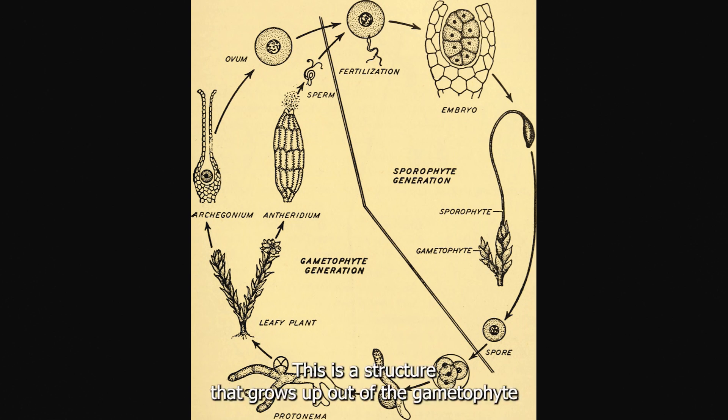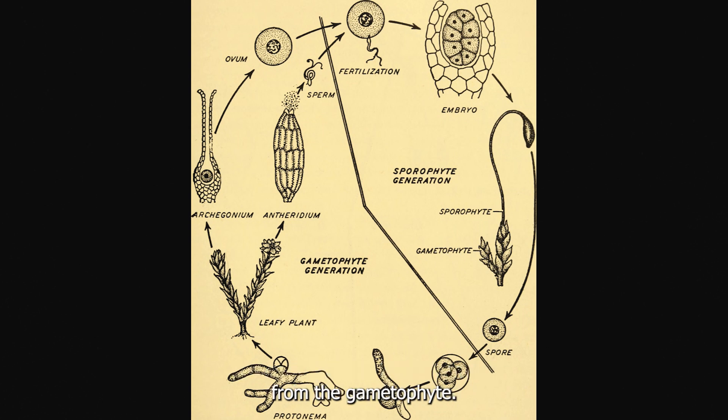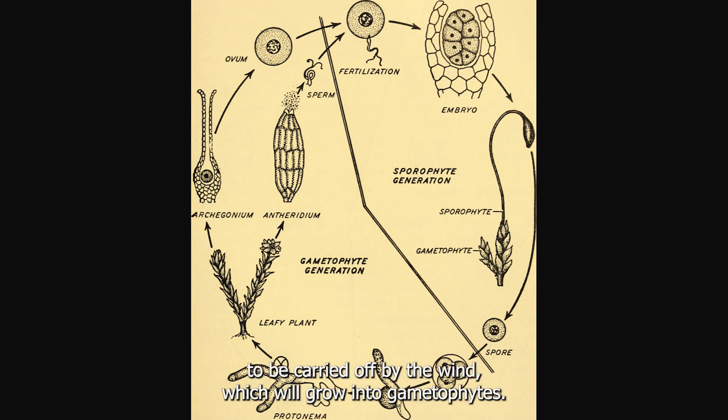The sperm will fertilise the egg, and this will then grow into the sporophyte. This is a structure that grows up out of the gametophyte. It can't produce its own energy and relies on the energy from the gametophyte. It will then release spores to be carried off by the wind, which will grow into gametophytes.